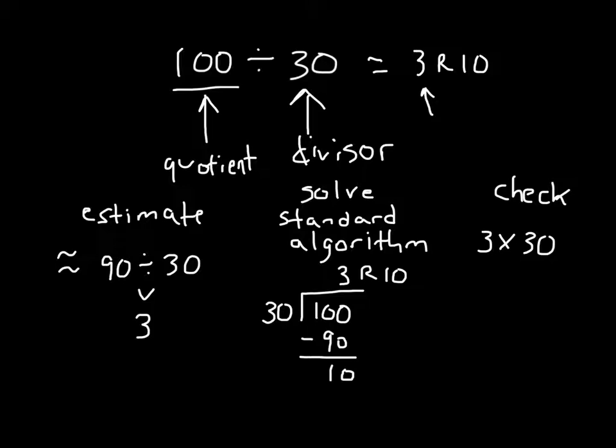3 times 30 is 90. Now 90, we still have to add back in the remainder of 10, and 90 plus 10 does equal 100, which matches with our original quotient. So our check is valid.